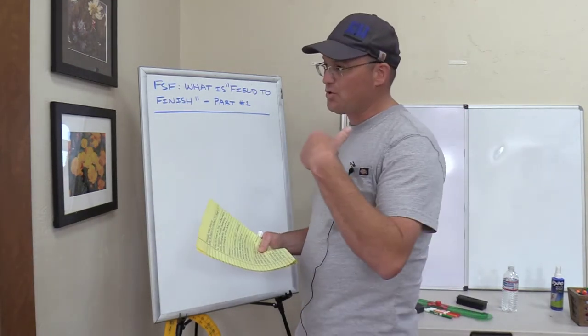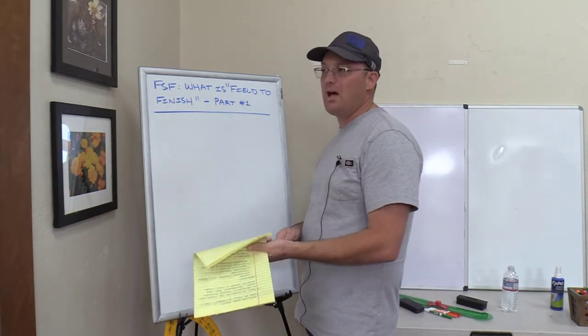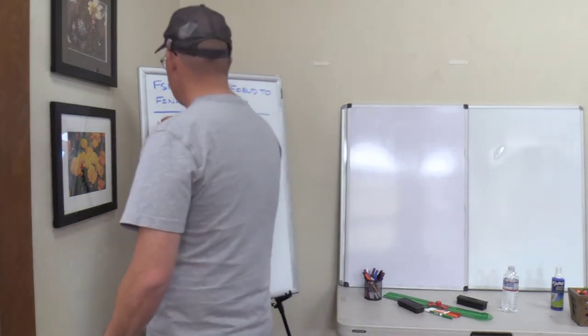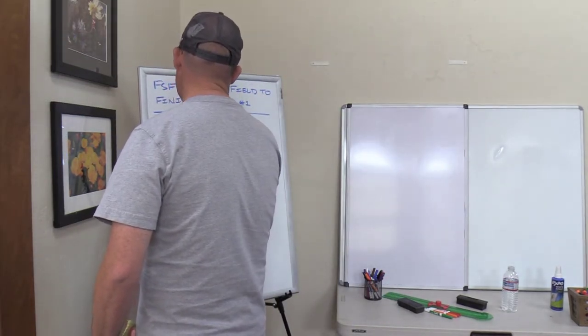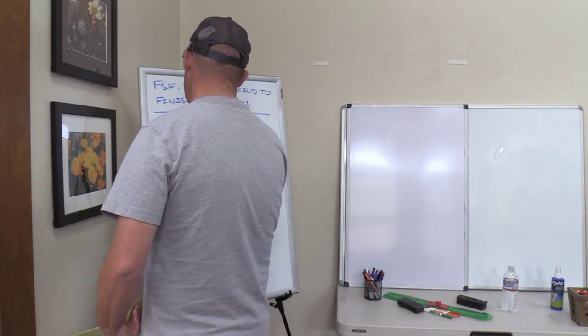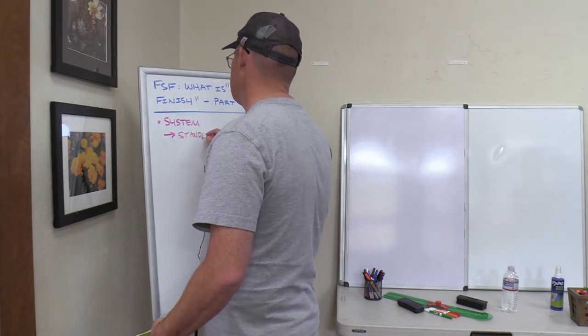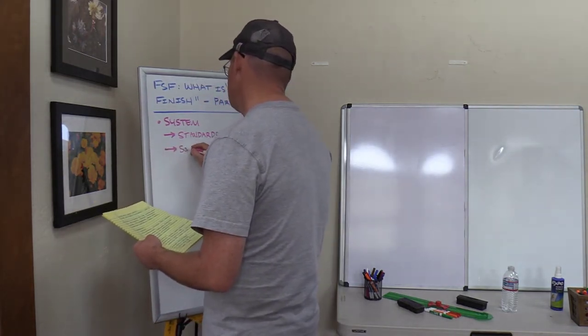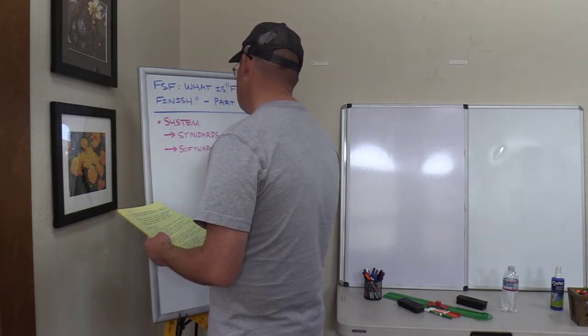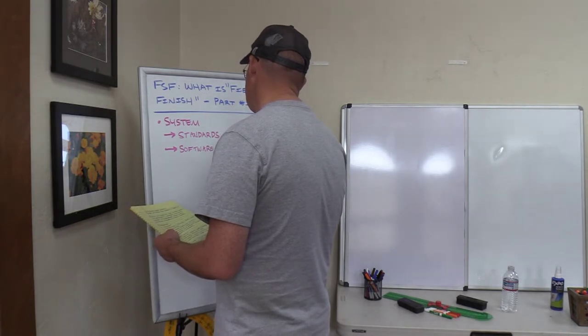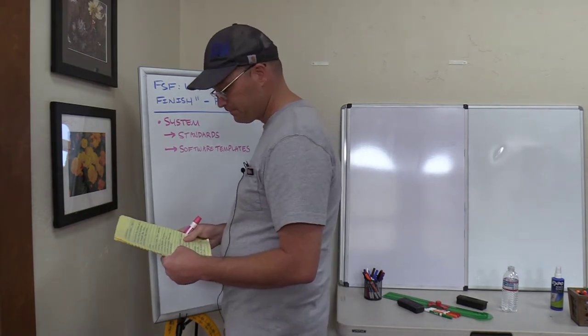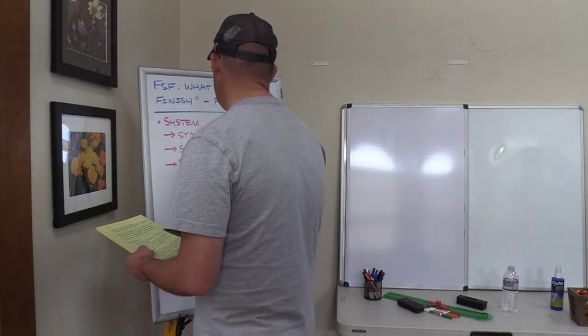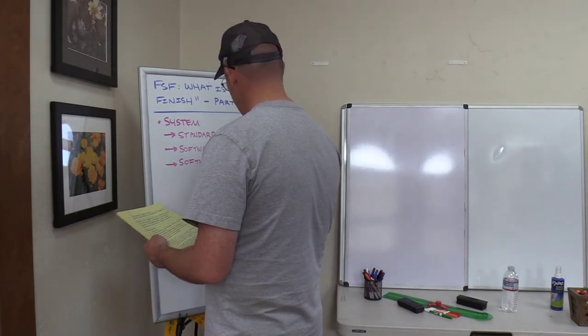Software templates are part of the system. If you're in software like AutoCAD Civil 3D, you have your description keys. You have your line work codes. There are different templates that you have to implement in your software. That's another part of the system. Then finally, there's actual software automation that happens. For example, it's automated line work. That's where you use line work codes to draw your line work. Again, field to finish is a system. It's a system. There's three parts, primary parts to the system. There's standards.